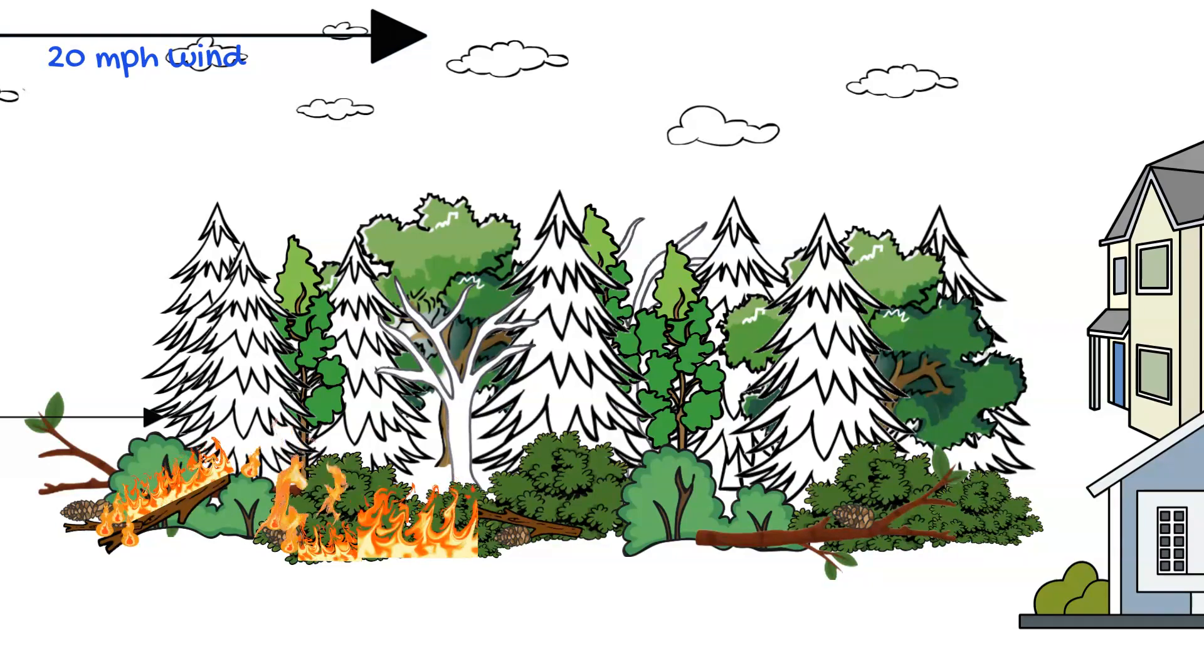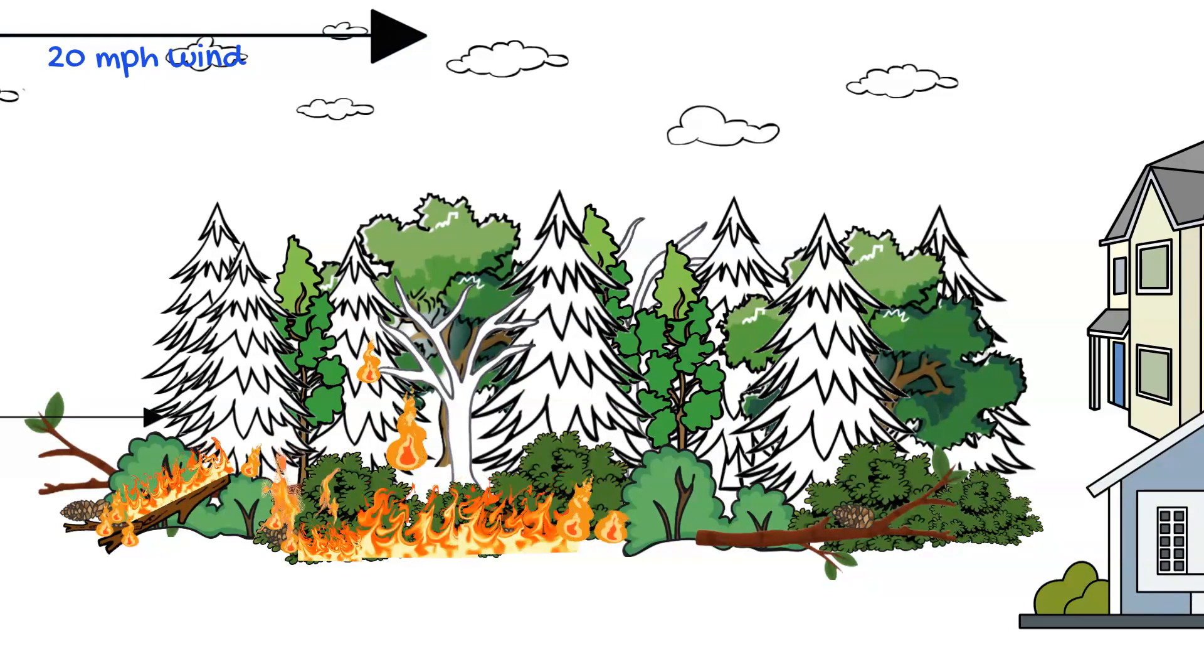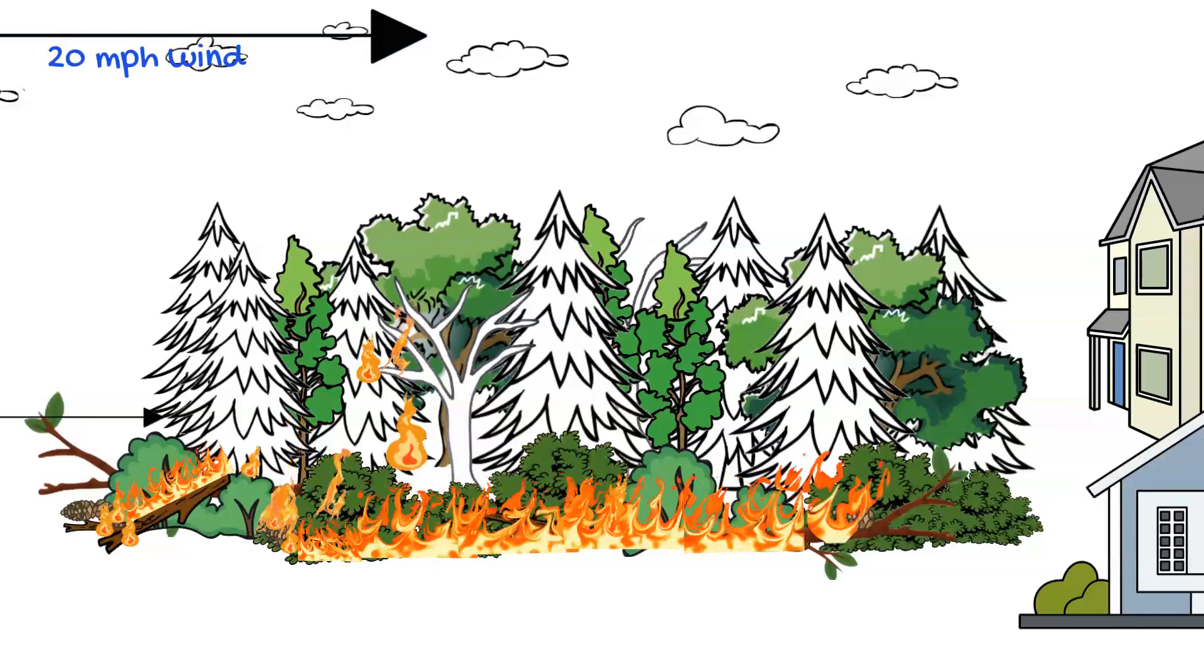Now you notice it's going to start spreading into the brush, then up into the lower limbs of the trees. And you're going to see that the fire is going to spread downwind along the ground fuels.